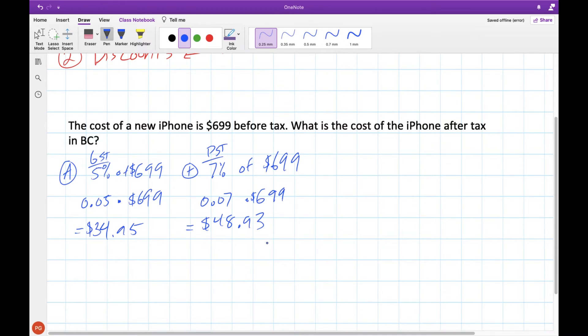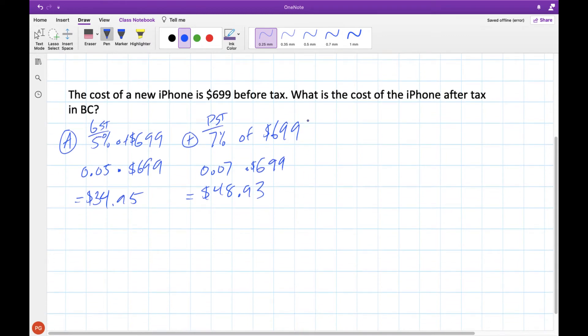Once we have these two amounts, we can add them together and add them to the total cost, and we'll get a final answer of $782.88. That's how much the iPhone would cost after tax. Now personally, I find this way kind of slow, and you end up doing a lot of intermediate steps, writing down a lot of numbers, and the other two methods are a lot faster, and involve fewer of these intermediate steps.